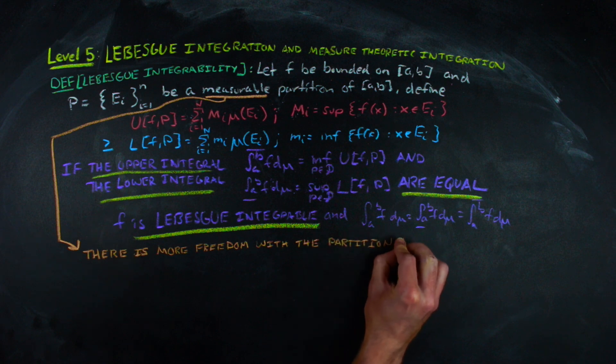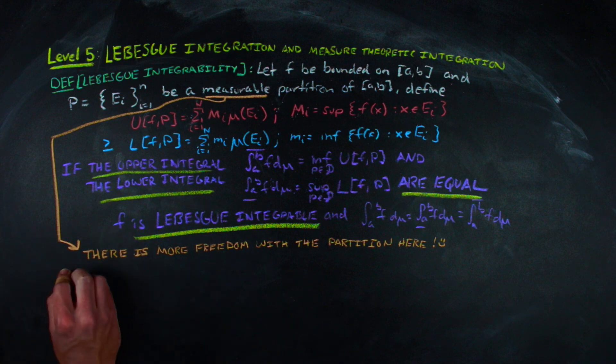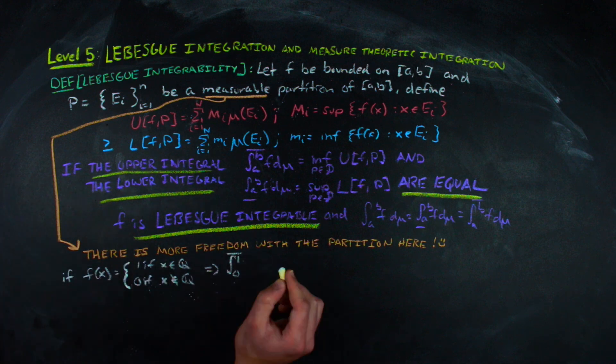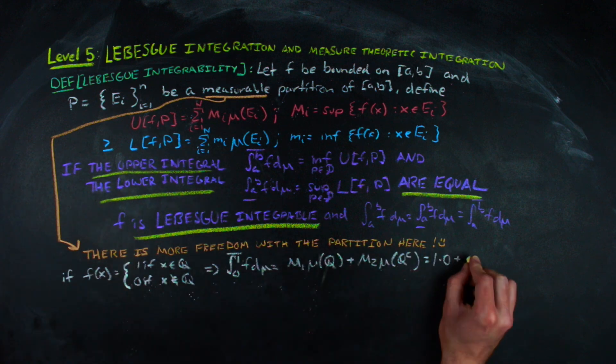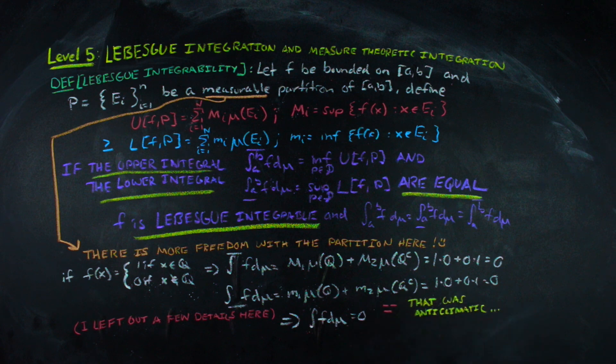So now, essentially, you have more freedom in breaking up the interval that you're working with. And then, with a bit of help from your time hanging out with measures, you realize that the Lebesgue integral of that scary function you couldn't draw is just zero, and that feels a bit anticlimactic.